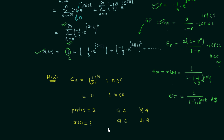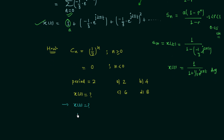The four options are: option A is 2, option B is 4, option C is 6, and option D is 8. The process is simple: first find signal X(t), then substitute t = 0 to get X(0). Once you have your answer, post it in the comment section. See you in the next lecture.